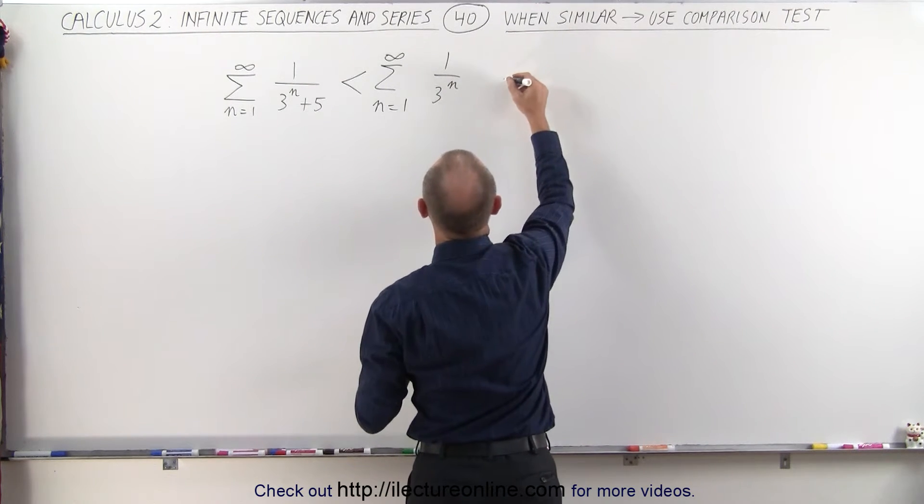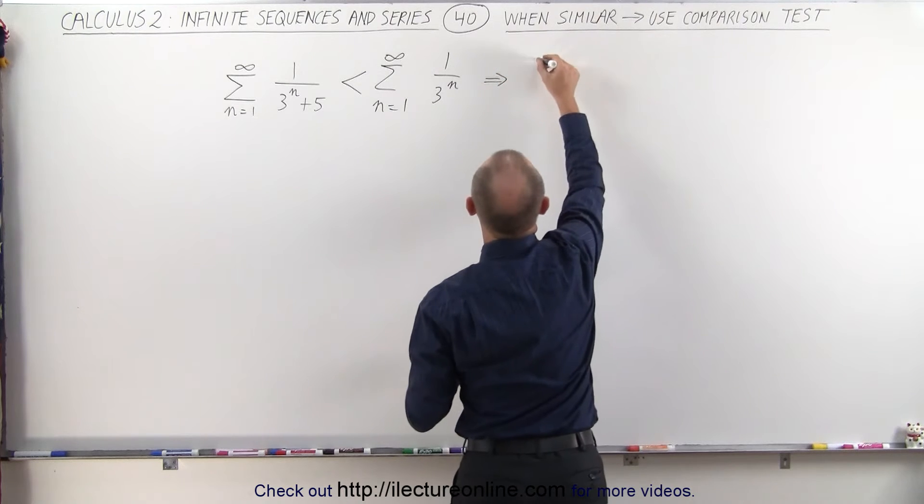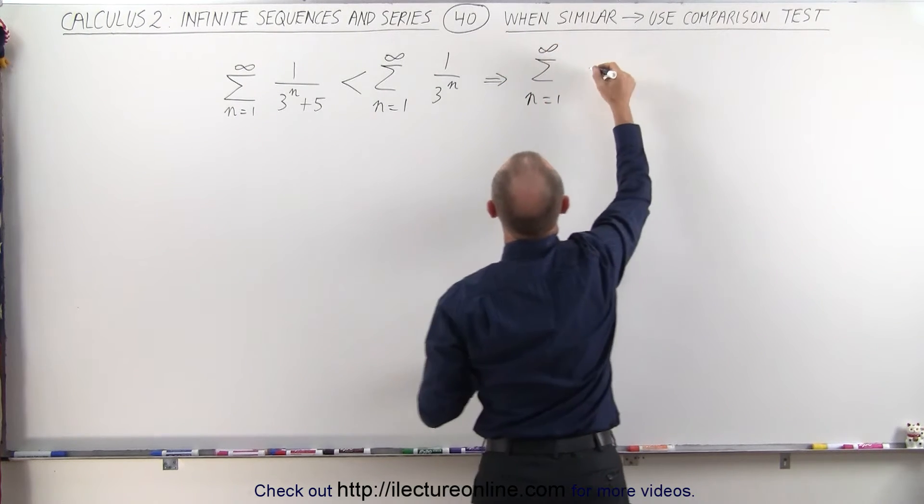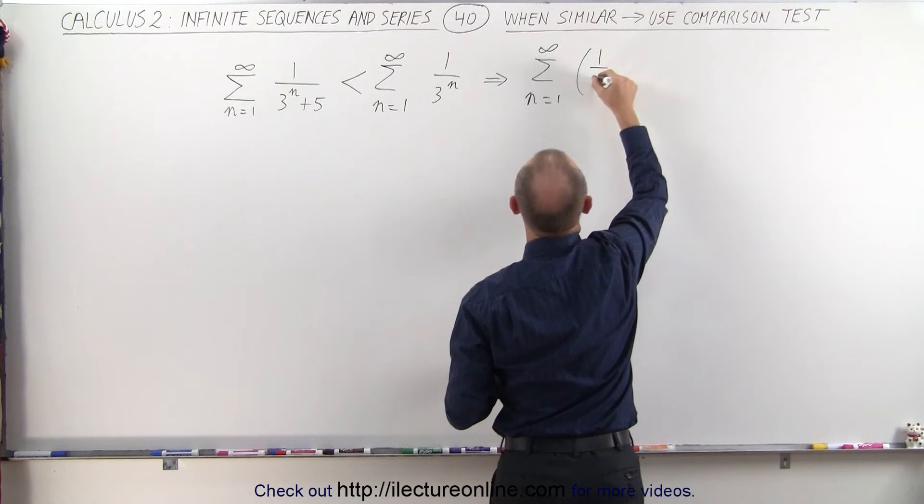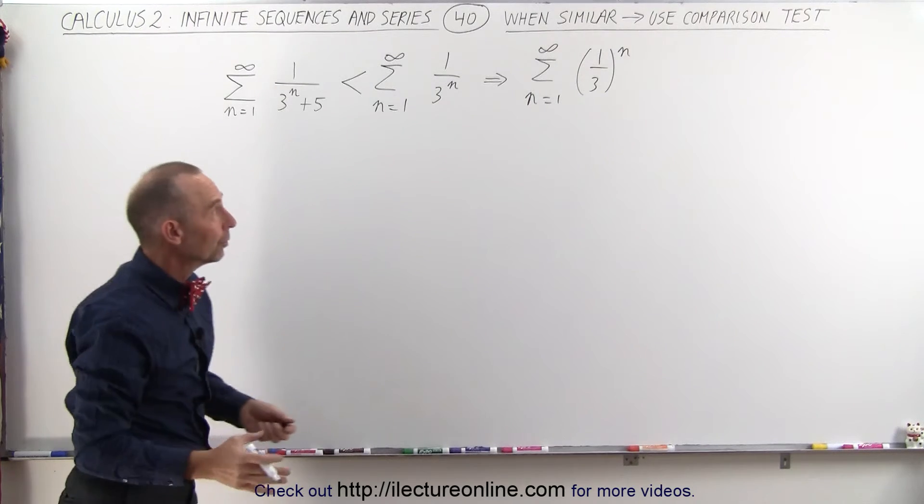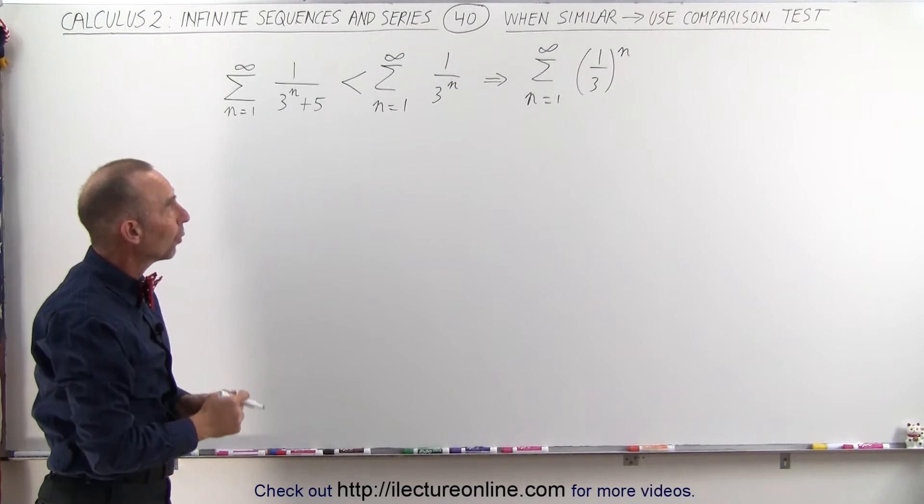So this can be written as the infinite sum of n equals 1 to infinity of the quantity 1 over 3 raised to the n power. That's exactly the same thing, because 1 to the n power, no matter what n becomes, is always equal to 1.